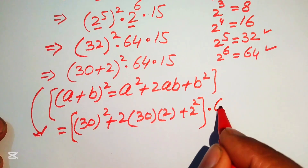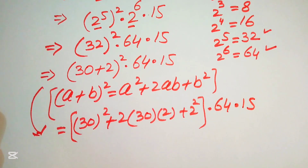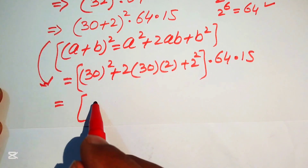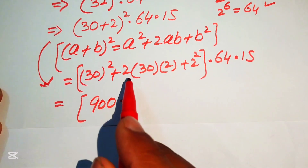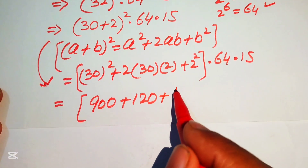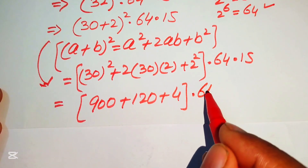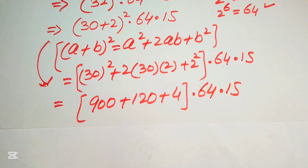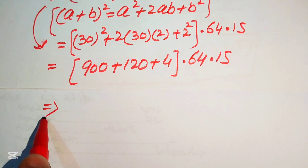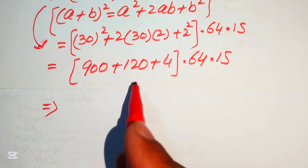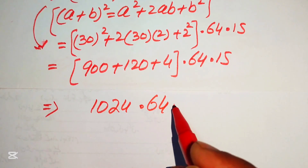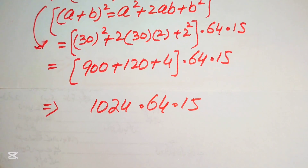Computing each term: 30 squared equals 900, 2 times 30 times 2 equals 120, and 2 squared equals 4. Adding these: 900 plus 120 plus 4 equals 1024. So we have 1024 multiplied by 64, multiplied by 15.